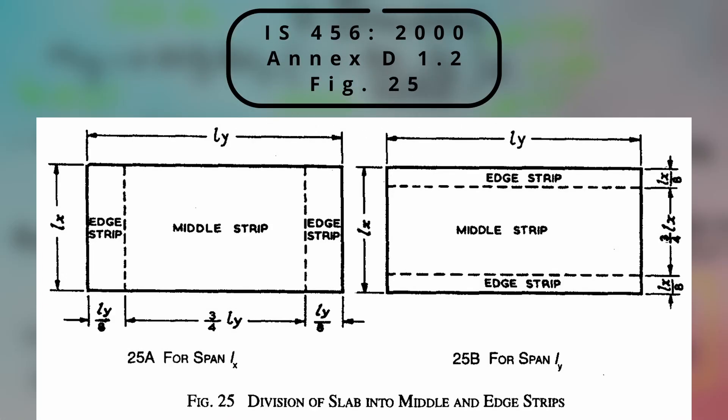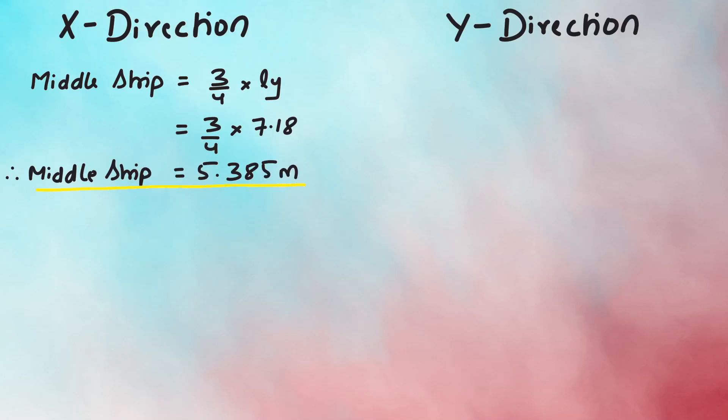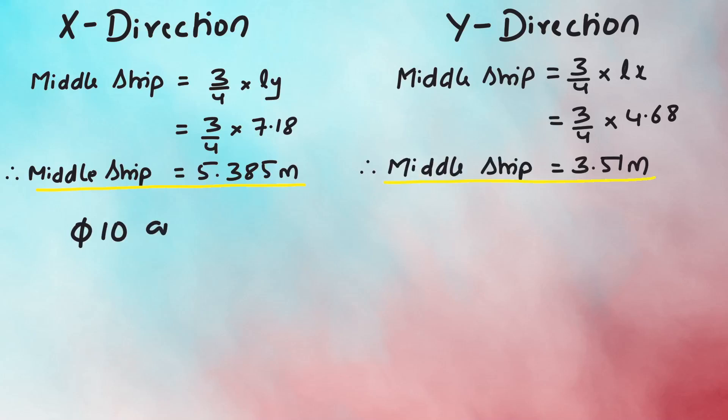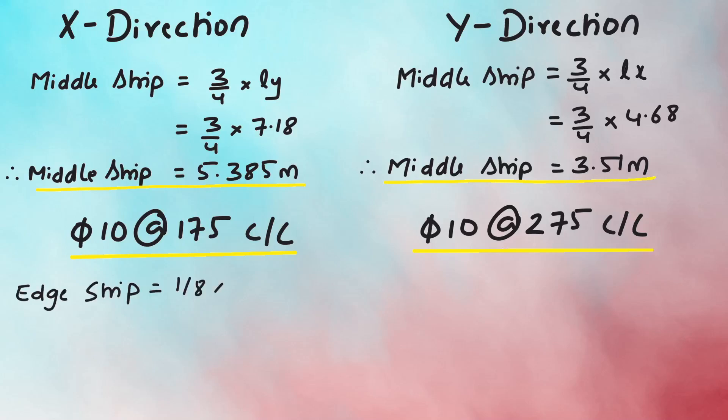Now, the two-way slab are divided into middle and edge strips as seen in figure 25, where middle strip is 3 fourth of the width and each edge strip being 1 eighth of the width as per Annex D 1.2. So, for X direction the middle strip width is 3 fourth of Ly that is 5.385m, while for Y direction is 3 fourth of Lx that is 3.51m. The main reinforcement of tor 10 at 175mm center to center will be laid along the shortest span of the slab in the middle strip whose length is 5.385m, while the distribution steel will be laid along the longest span in the middle strip for a length of 3.51m.